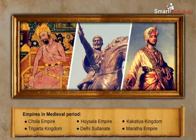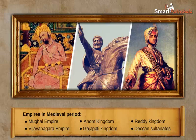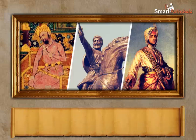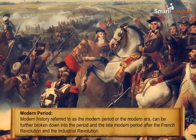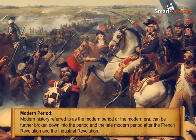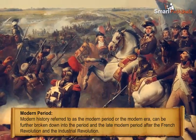The list of empires whose traces are found in Indian history during the medieval period are shown here. Now let us have a look at the modern period. The modern history, referred to as the modern period or the modern era, can be found broken down into periods following the French Revolution and the Industrial Revolution.